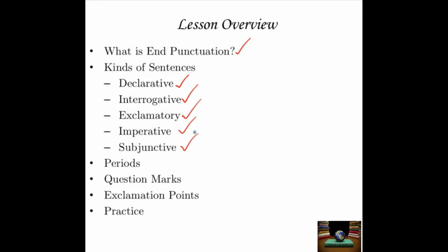Then we're going to look at the three main kinds of end punctuation in written English. We're going to look at how to use periods, question marks, and exclamation points. And we're going to end, as always, with a set of some practice. You'll get to use your own end punctuation in some sample sentences.